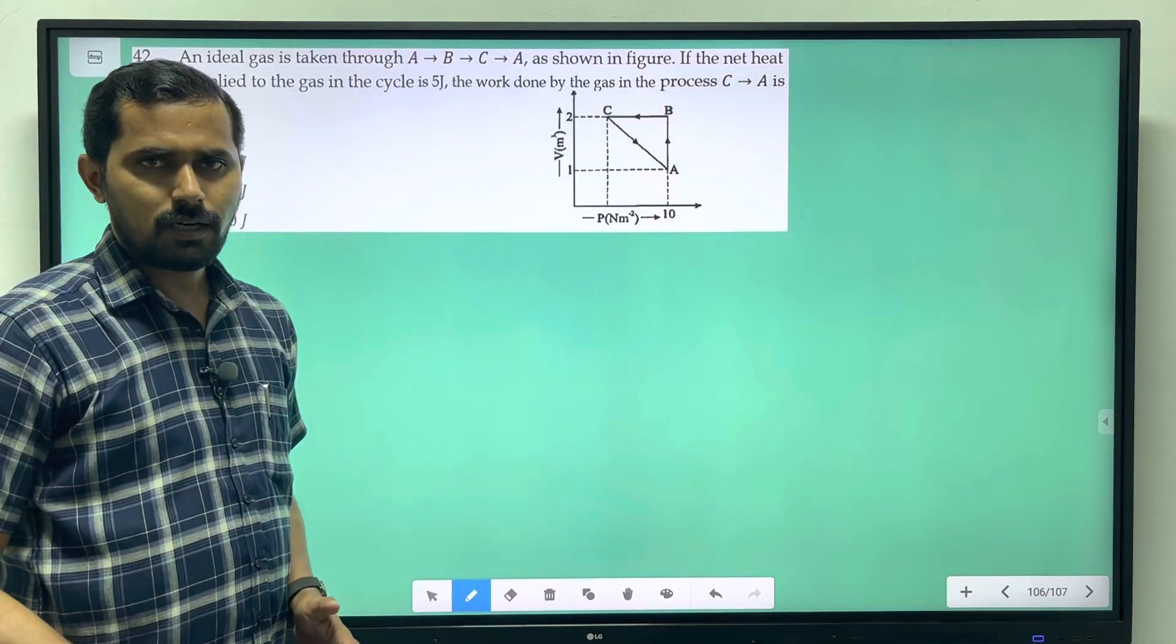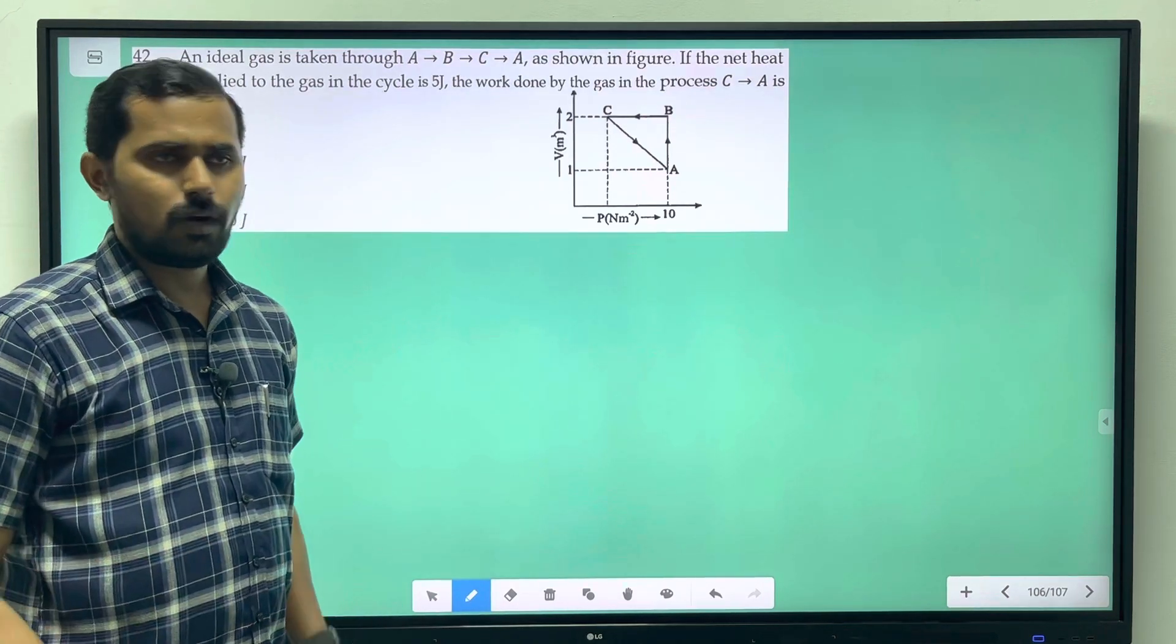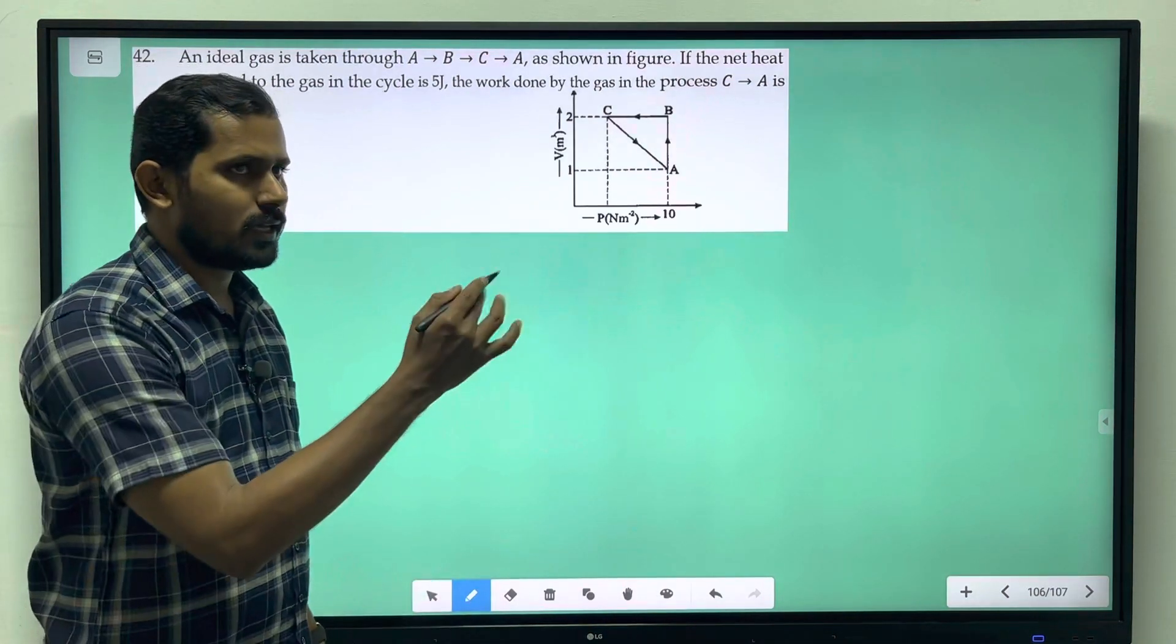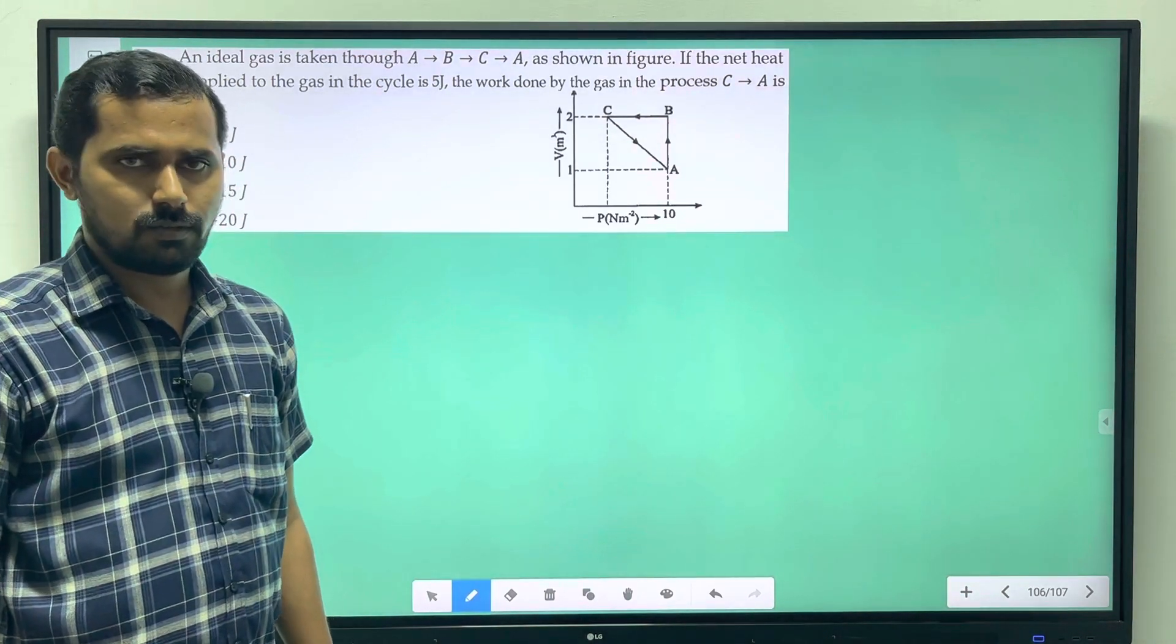We have the work done - area traced by the curve with the volume axis. The area traced, that gives us the work done.